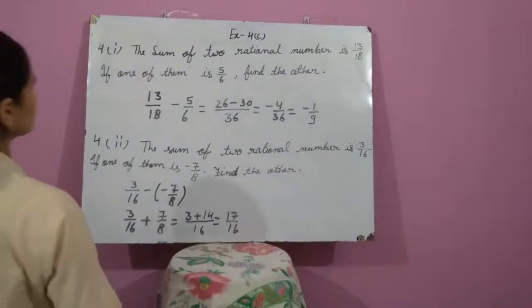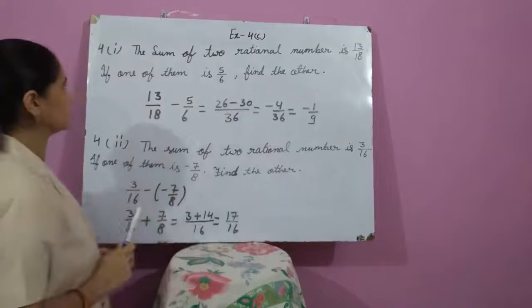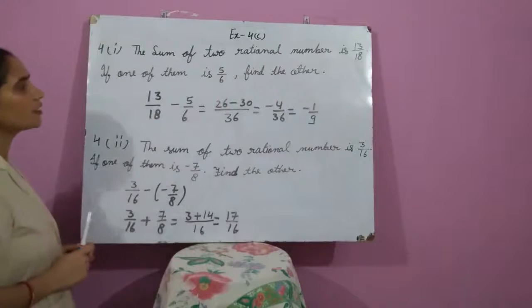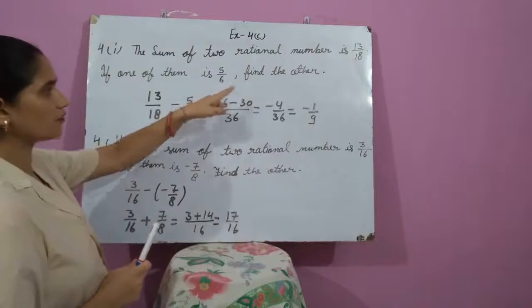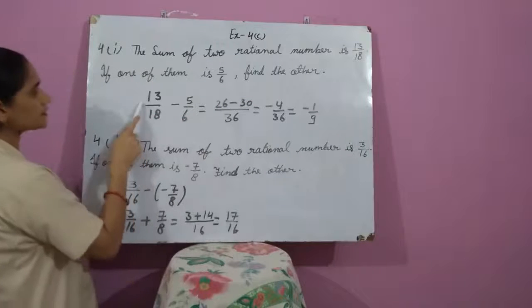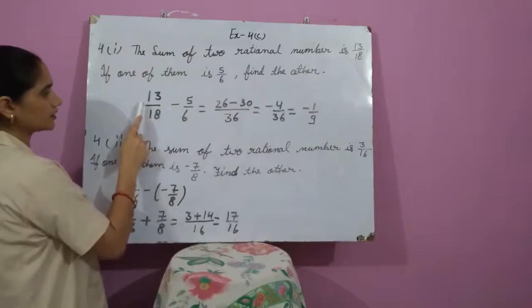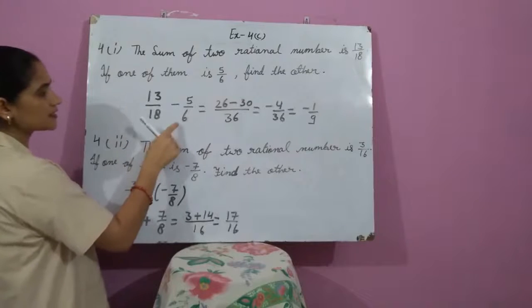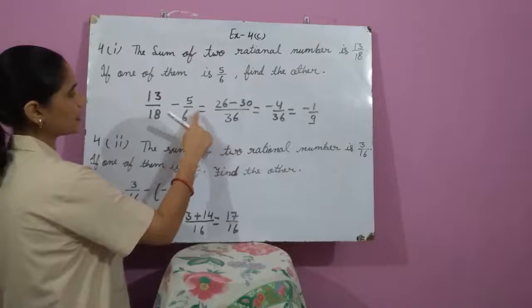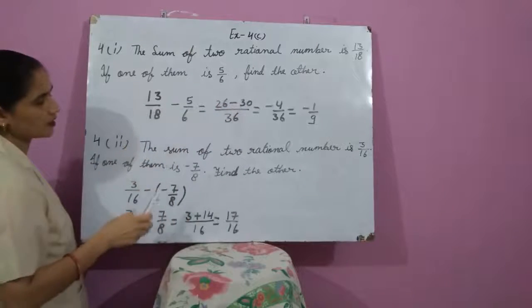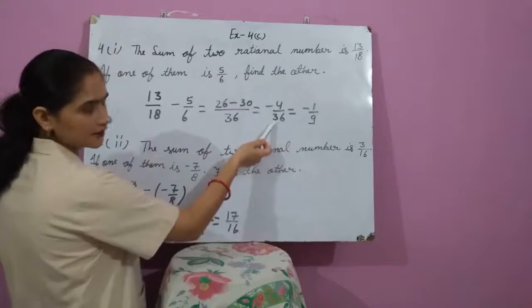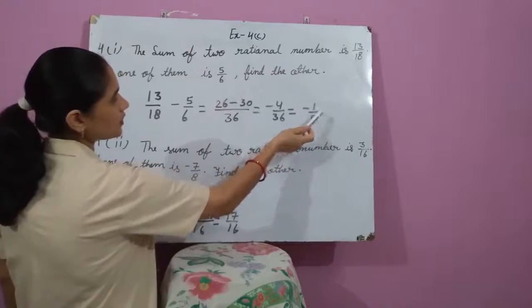Question number 4, first part: The sum of two rational numbers is 13 upon 18. If one of them is 5 upon 6, find the other. If we subtract the given number from the sum, we get the second number. So: 13 upon 18 minus 5 upon 6. The LCM is 18. After the calculation we get 13 minus 15, which gives minus 2 upon 18, and the required number is minus 1 upon 9.